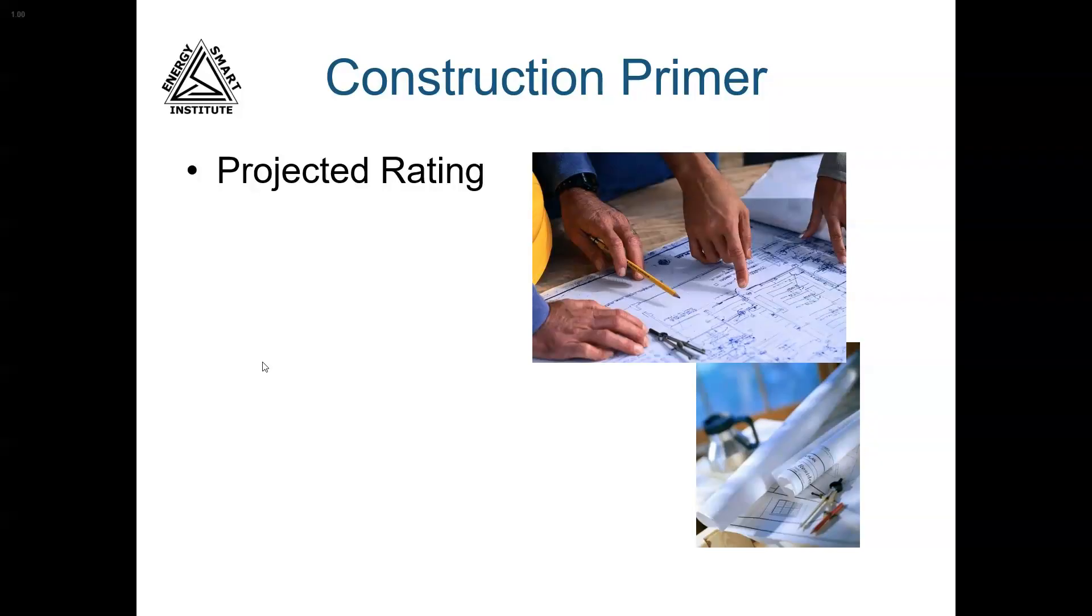This is called a projected HERS rating. It helps the builder understand whether they'll be able to pass the required energy codes and provides them with a report to file with their plans, which may be required to obtain their permit. If they're interested in using the HERS rating to qualify for an incentive or green program, the projected rating helps them understand any changes they may need to make to qualify for the program, while those changes are still on paper at the least expensive stage of construction.